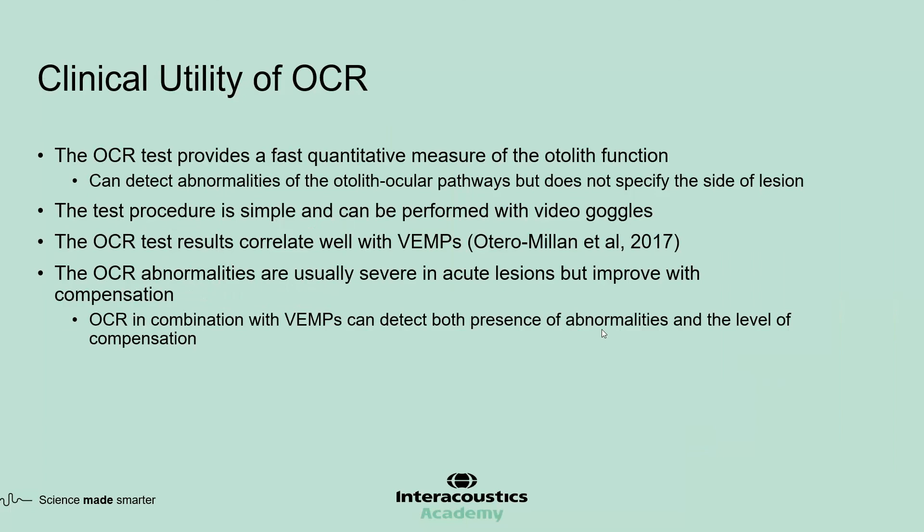The clinical utility of the OCR: the OCR test provides a fast measure of otolith function and can detect abnormalities of the otolith-ocular pathways, but it's not always side-specific. The test procedure is simple and can be performed with video goggles, and if your device can measure torsional eye movements, you can quantify the test results. The OCR test results correlate well with VEMPs. The OCR abnormalities are usually severe in acute lesions but improve with compensation. By combining the OCR and VEMP findings, one can detect both the presence of an abnormality and the level of compensation for it.